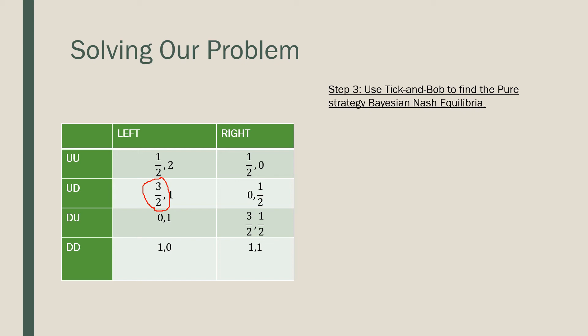Let's think about right. If right is chosen, DU should be picked because it gives the highest payoff here. Now let's talk about our column player's perspective. If UU is picked, what is our column player's best response? He should be picking left. Let's use blue.